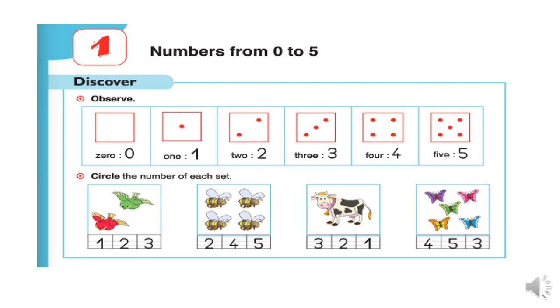How many butterflies do we have? One, two, three, four, five. So, we circle number five.